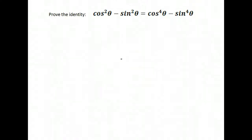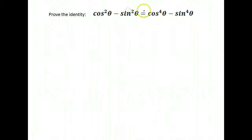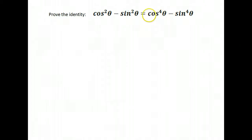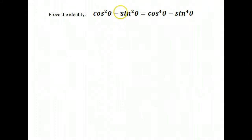This is kind of an extension of the problem we just did. It doesn't look the same but we're using some of the same things. One issue we have is that on the left hand side we have cosine squared and sine squared, while on the right hand side we have the fourth power. So we either need to find a way to reduce these to squares or build these up to fourths.